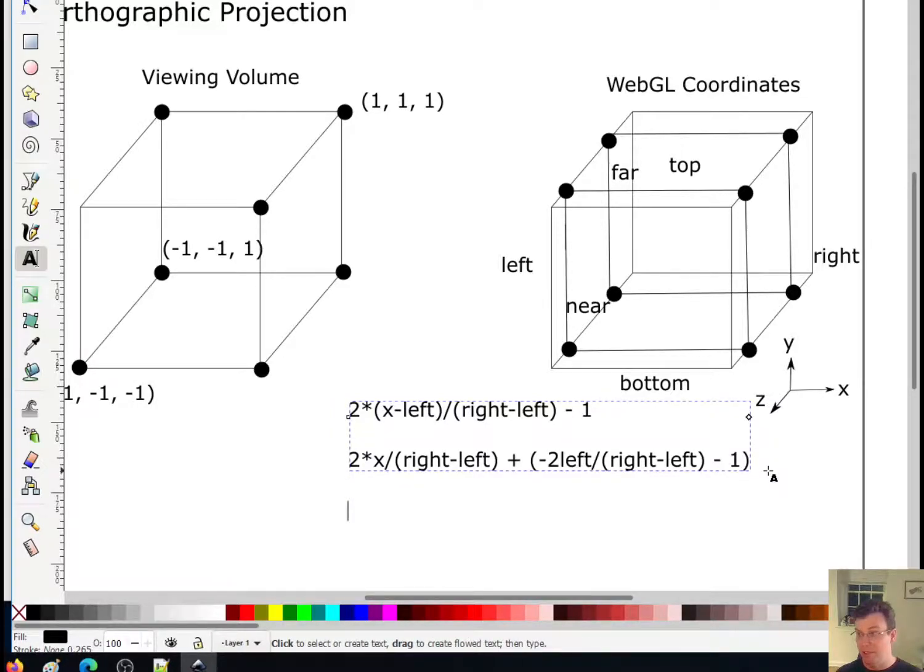Okay, okay, so that's the equation for mapping the left and the right. To map up and down it's a very similar thing. It's going to be two times y over, it'll be top minus bottom, plus negative two bottom over top minus bottom minus one. Okay.